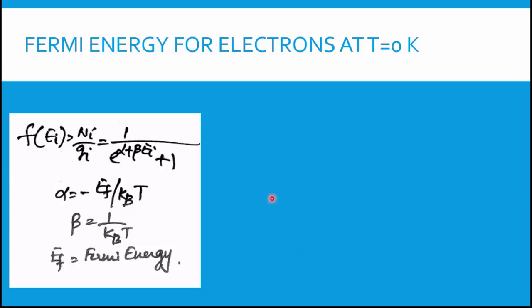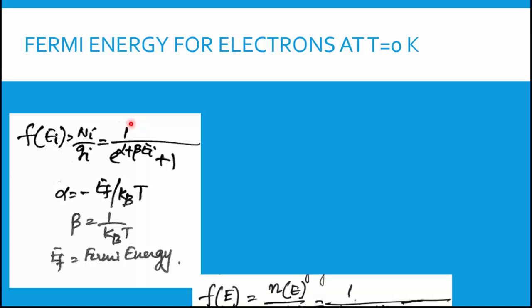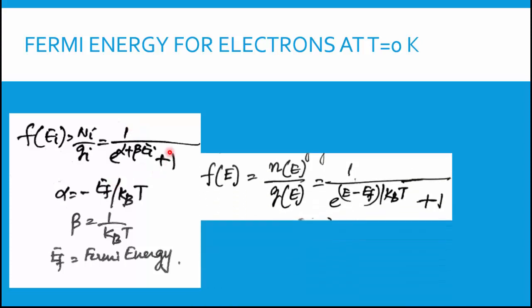On your screen you have the distribution function formula for electrons studied in the previous lecture. The distribution function formula is n_i / g_i = 1 / (e^(α + βE_i) + 1). Substituting the values of α and β, the Fermi-Dirac distribution function becomes f(E) = 1 / (e^((E - E_F)/kT) + 1).